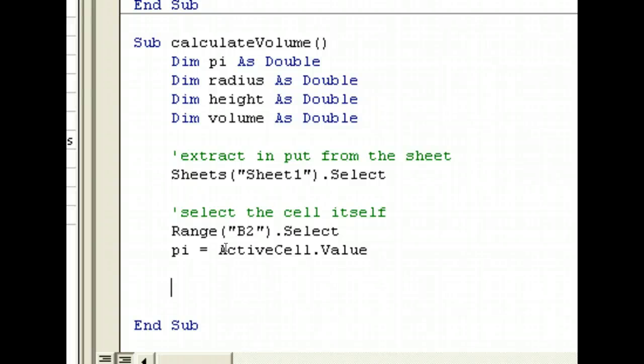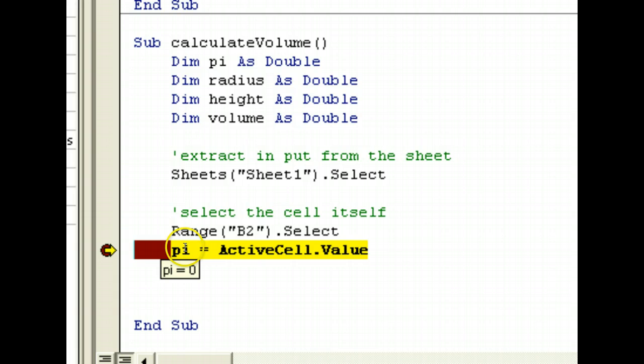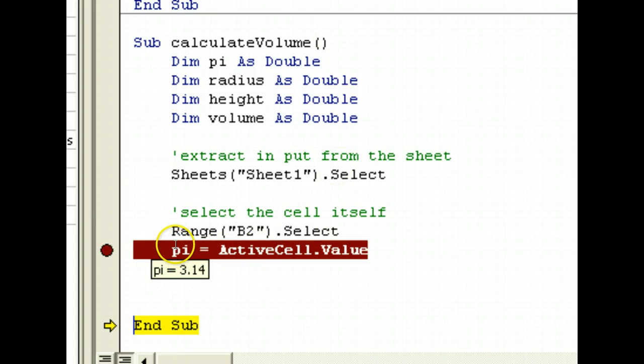Now, to test this, what we can do is we can put a break line. What happens when we put a break line is we can run the code and then the code stops here. We can see what's the value of this. So, click on the arrow. You can see that the value is zero. But, if we go to the next line. If we do a step over, go to the next line. Now, the value is 3.14. So, it actually gets the correct value.